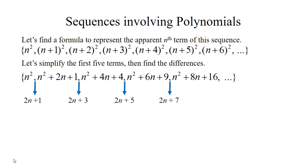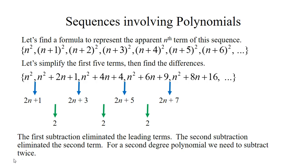We didn't get a common difference this time, so we're going to subtract one more time. Subtracting 2n plus 3 minus 2n plus 1 gives us 2, and we get 2 again each time — so this is a common difference, but it was on the second subtraction. If you have a degree-2 polynomial you'll have to subtract twice: the first row cancels the leading n squared terms, and the second subtraction cancels the next term.